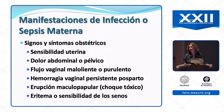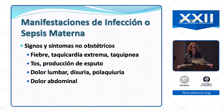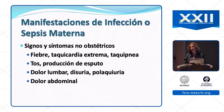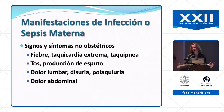Other obstetric manifestations include purulent or odorous vaginal discharge, persistent vaginal bleeding after delivery, and toxic shock — look for a maculopapular rash. Also consider mastitis, looking for erythema and sensitivity or pain in the breast. Non-obstetric sources should also be considered: pneumonia with sputum production and cough, urinary tract infection with flank pain and dysuria, and appendicitis presenting with abdominal pain.